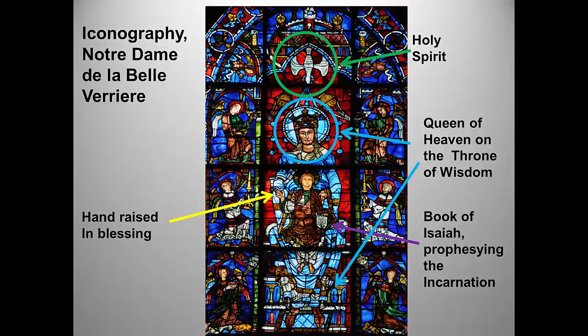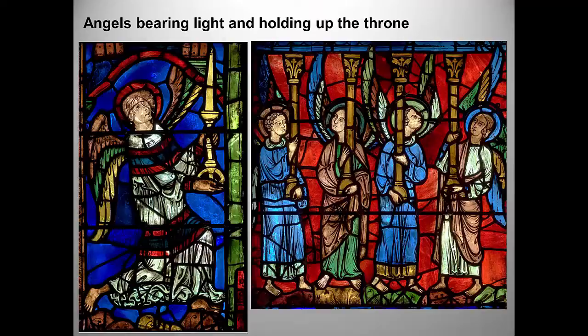The actual passage shown is 'omnis vallis implebitur' — every valley shall be filled — a prophecy of the incarnation found in Isaiah 40 and recalled by John the Baptist in Luke 3:5. The dove symbolizes the Holy Spirit descending, and the panels framing the Virgin are filled with angels: an angel bearing candlesticks announcing Christ as light of the world, and four angels who may represent the four evangelists holding up the throne of heaven.